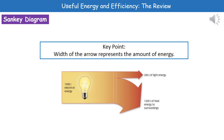One way we can show this is through the use of something called a Sankey diagram. It's an arrow that shows the different forms of energy and what they're changed into. If asked to draw a Sankey diagram on the exam paper, remember that the width of the arrow represents the amount of energy, so make sure the width is representative of the energy — use a scale.